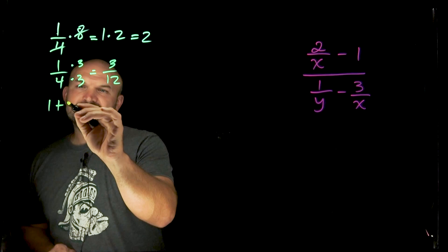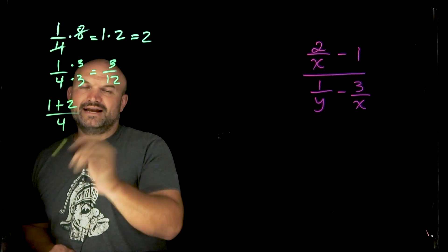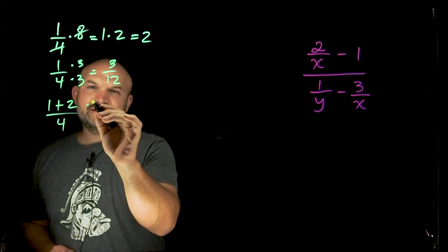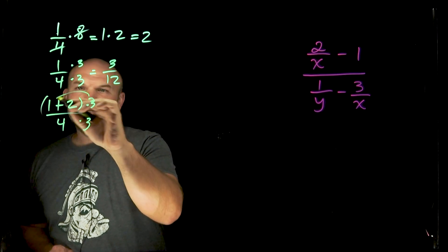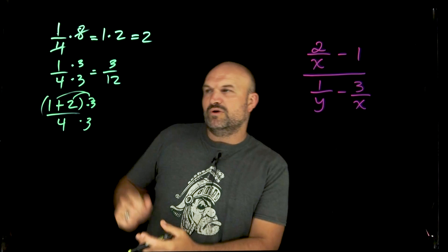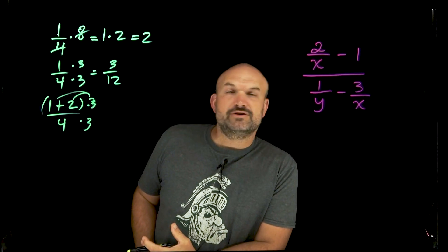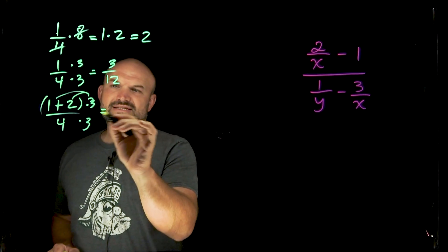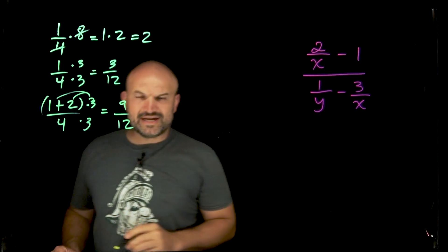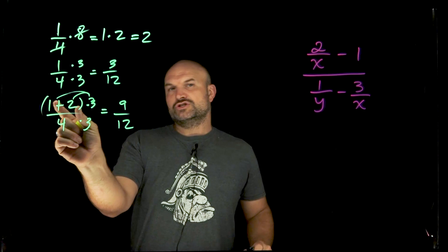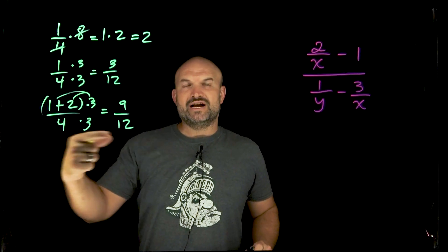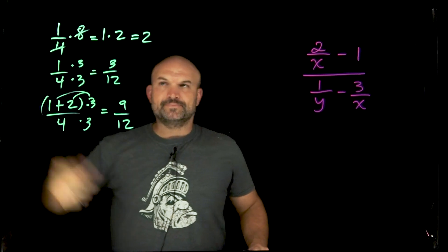Furthermore, if I had 1 plus 2 over 4, and I was going to do that same thing, I would need to make sure I put parentheses around that numerator. I need to multiply the 3 times the top and the bottom. Now remember, 1 plus 2 is going to be 3, so that's going to be 3 fourths. So 3 times 3, that's going to equal 9 twelfths, which again would simplify down to 3 fourths. Just remember, when you're multiplying something and you have terms that are separated by addition or subtraction, you need to make sure you distribute.